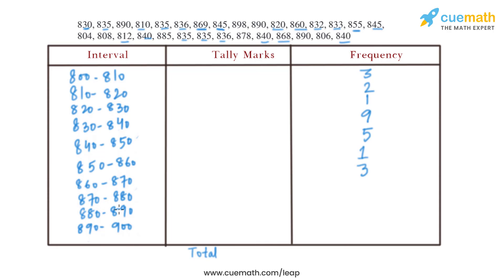Between 870 and 880, there is only one value: 878. Between 880 and 890, there is also only one value: 885. Between 890 and 900, there are four values: 890 is 1, 898 is 2, 898 again is 3, and 890 again is 4.